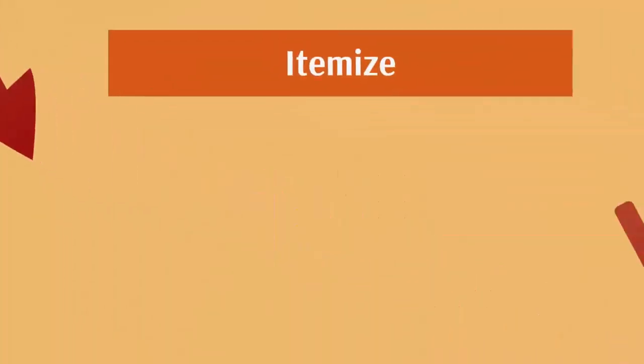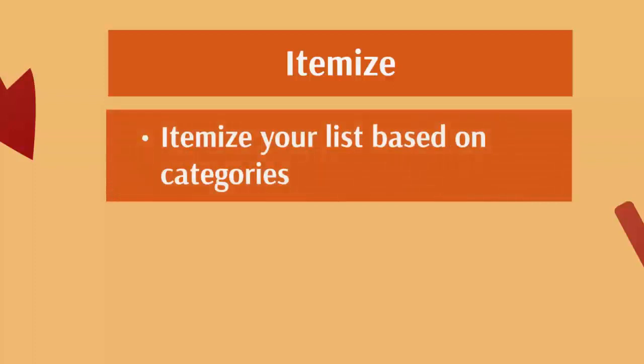Once you have that list of tasks, and hopefully you've paused this video and done that, you want to itemize those tasks. We want to itemize your list based on categories. We're not trying to just prioritize the whole list — we are trying to look at the list of things we have to do, including the day-to-day things, and then categorize them. Make sure that you create categories.